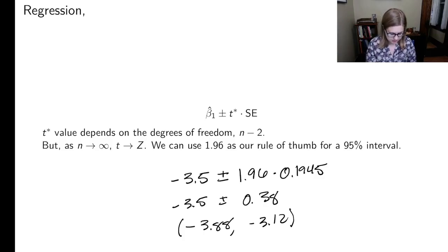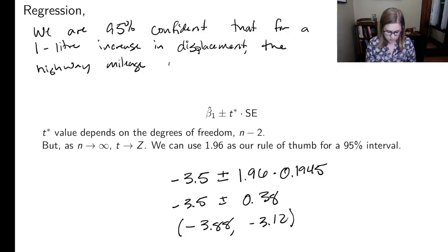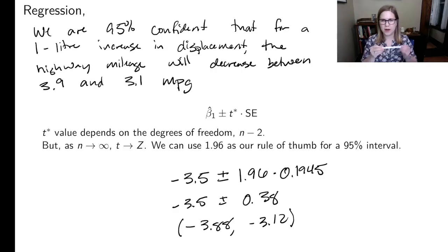So we could plug this into our generic sentence and sort of mix it up with the 95% confidence interval sentence. So I'm going to say we are 95% confident that for a one liter increase in displacement, the highway mileage will decrease, because it's negative, decrease between 3.9, let's round, and 3.1 miles per gallon. So we know that it's going to go down between 3 and 4 miles per gallon for a liter increase in the displacement. So that's how we would interpret our confidence interval.